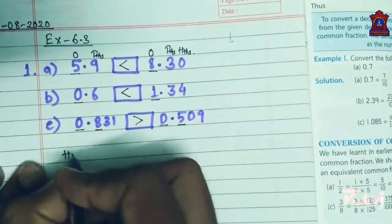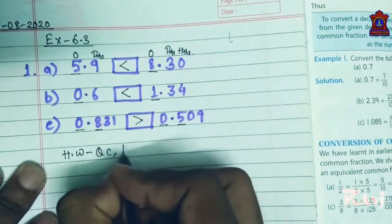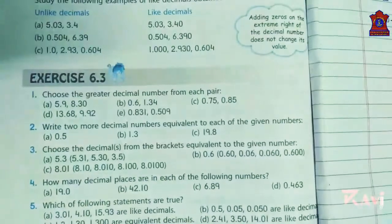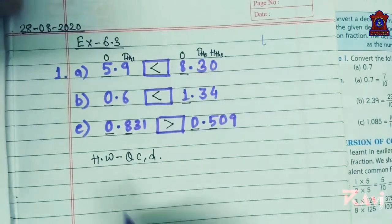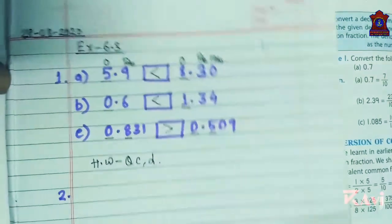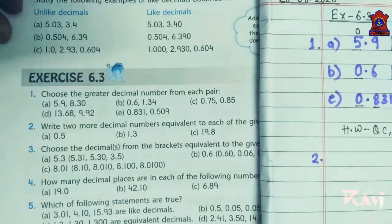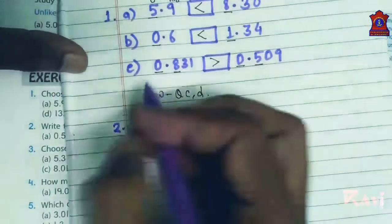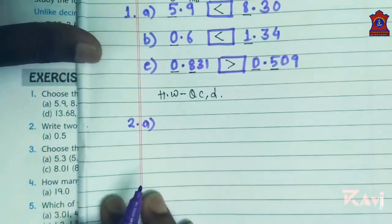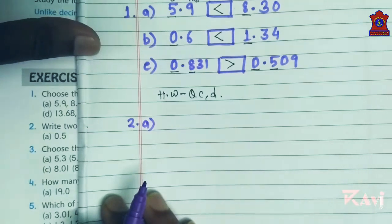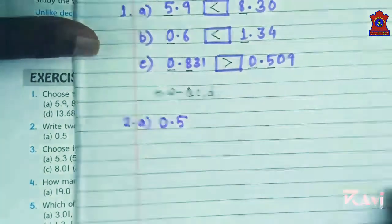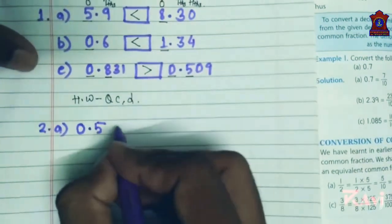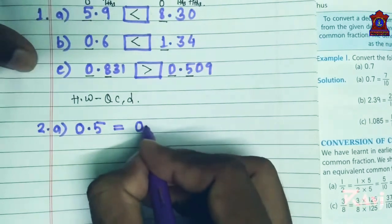Now look at question number 2: write two more decimal numbers equivalent to each of the given numbers. This is very simple — equivalent decimals were already explained at the beginning of this chapter in video number one. What are the equivalent decimals of 0.5?